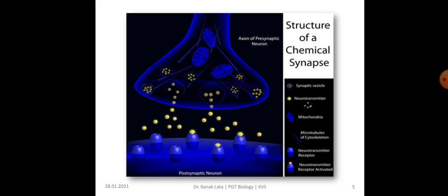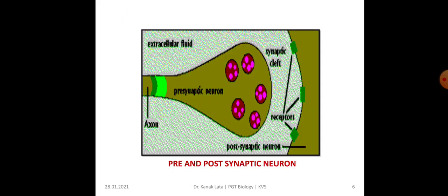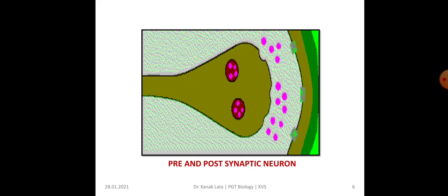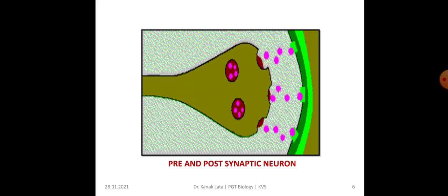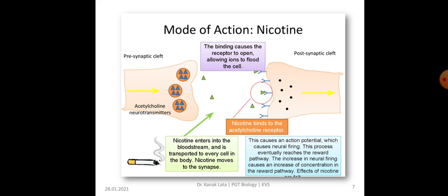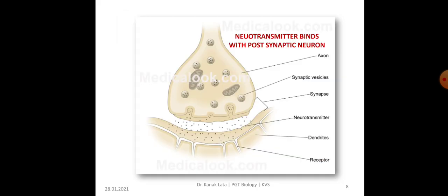Here, in the given figure, you may observe the structure of a chemical synapse. In the given figure, you may observe the action of presynaptic neuron and postsynaptic neuron. This is an example of mode of action of nicotine. The given figure shows the binding of neurotransmitter with its receptor present on the postsynaptic neuron.